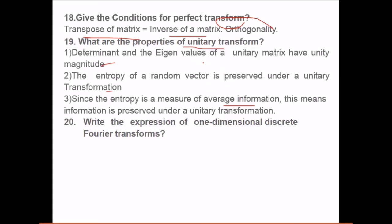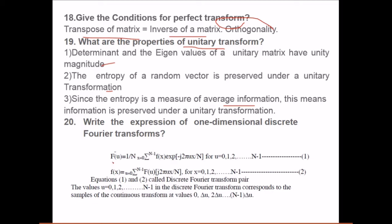Write the expression of one dimensional discrete Fourier transform. This is given by capital F(u). Fourier transform is 1 by n, sigma x from x equals 0 to n minus 1, f(x) e to the power minus j 2 pi u x by n. This is our actual signal or image with n samples. And this is the inverse one. Only the sign will change. These are the discrete Fourier transform pair. The value of u is equal to 0 to n minus 1. In the discrete Fourier transform this corresponds to the samples of continuous transforms at value 0, delta u, 2 delta u, n minus 1 delta u.